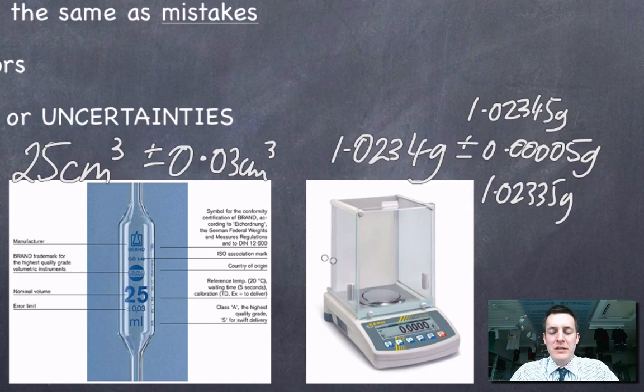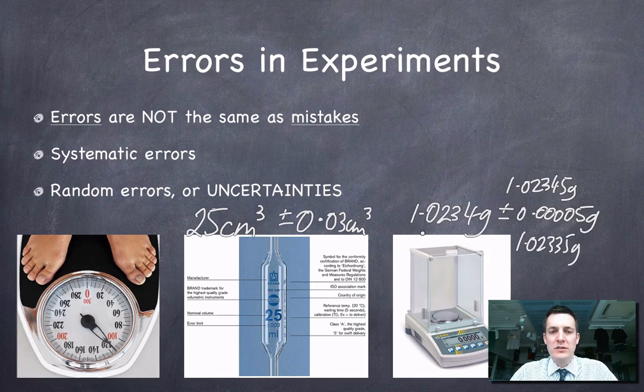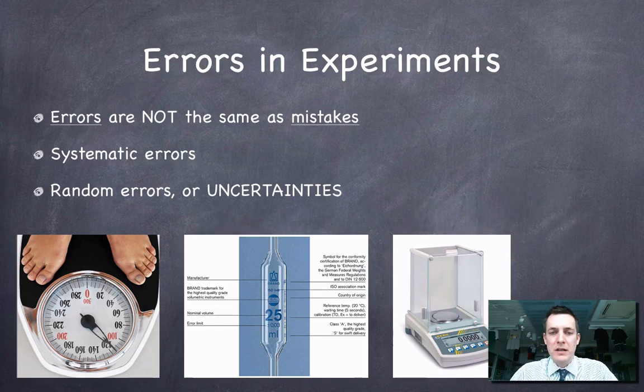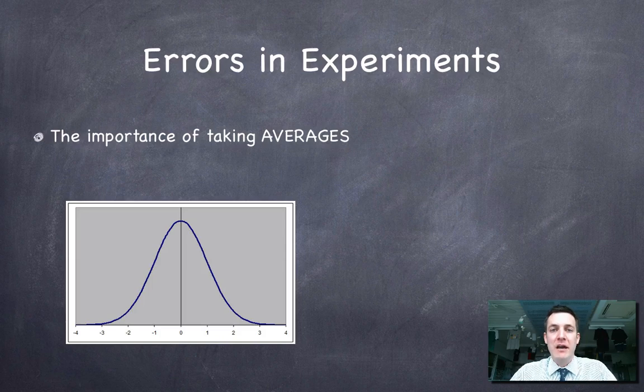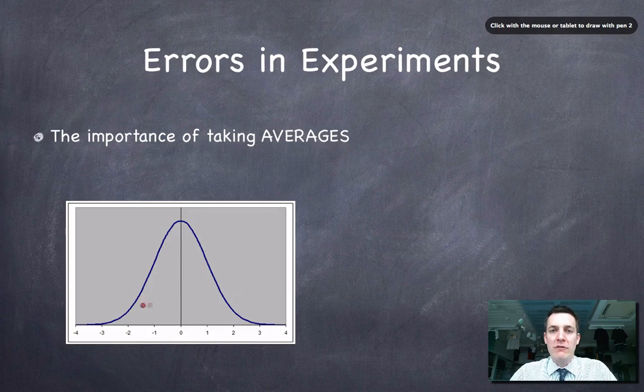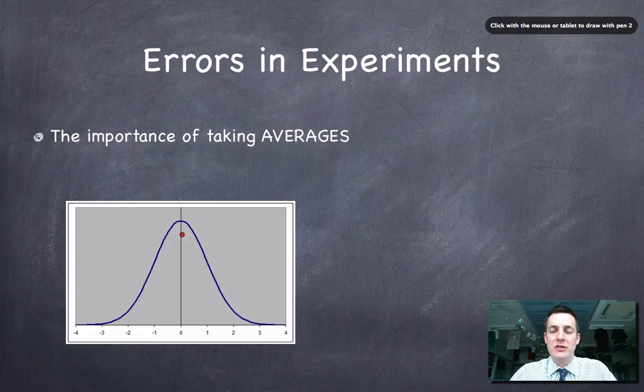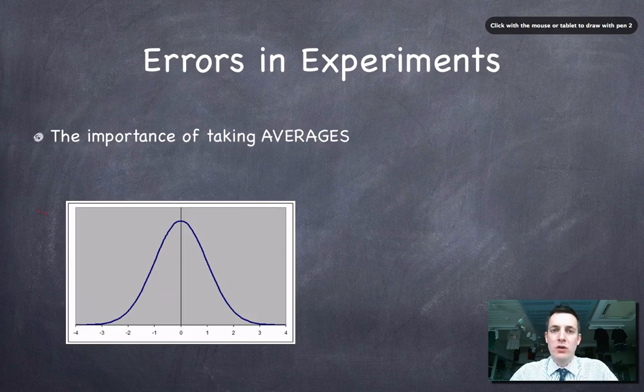So with both these pieces of equipment, I can't be absolutely certain that the value that I'm getting on the screen is correct. There's going to be a random error, which could be up or it could be down. But if I'm careful and if I repeat my experiments enough, then I can take an average. And what that will do is it will ensure that all the slightly high values and all the slightly low values will average out and give me something close to a true value. So it's very important when we do an experiment that we take averages because that will get rid of any random errors. It won't get rid of any systematic errors, because they'll all either be too high or too low, and averaging them will just give us a number that's too high or too low.